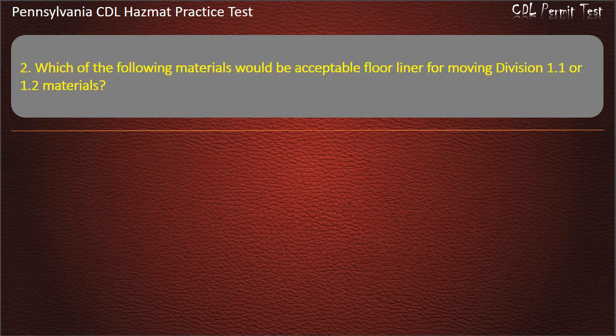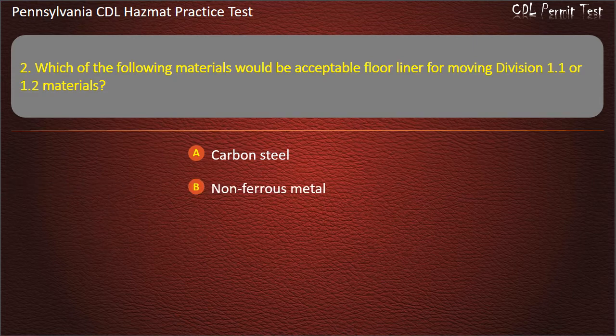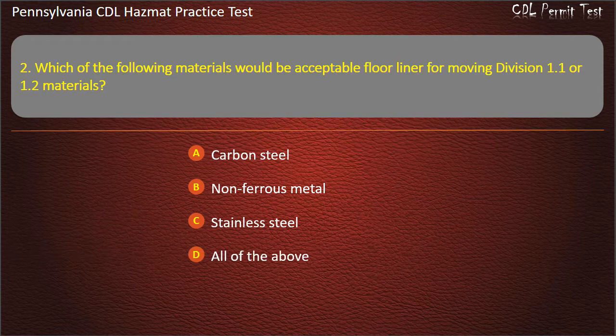Question 2. Which of the following materials would be acceptable floor liner for moving Division 1.1 or 1.2 materials? Options: Carbon Steel; Non-ferrous metal; Stainless steel; All of the above. Answer: Non-ferrous metal.